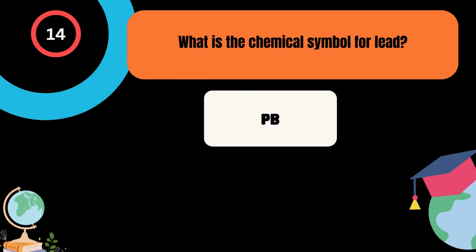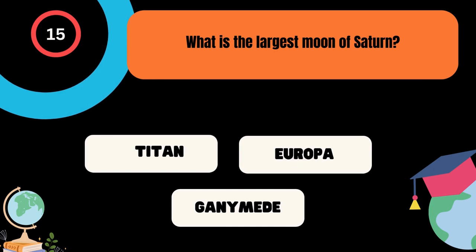What is the largest moon of Saturn? A. Titan, B. Europa, C. Ganymede. And the correct answer is Titan.